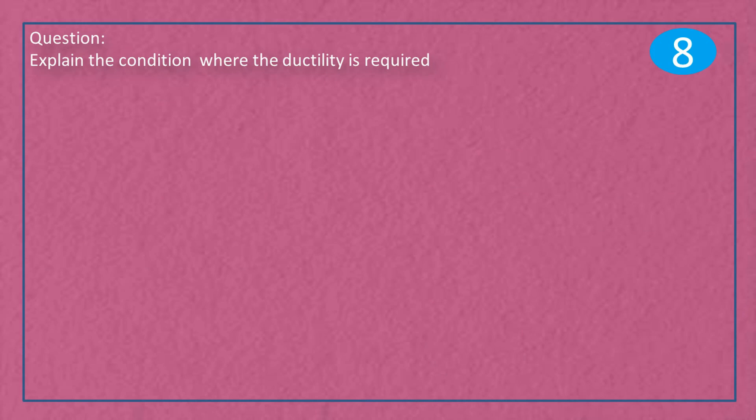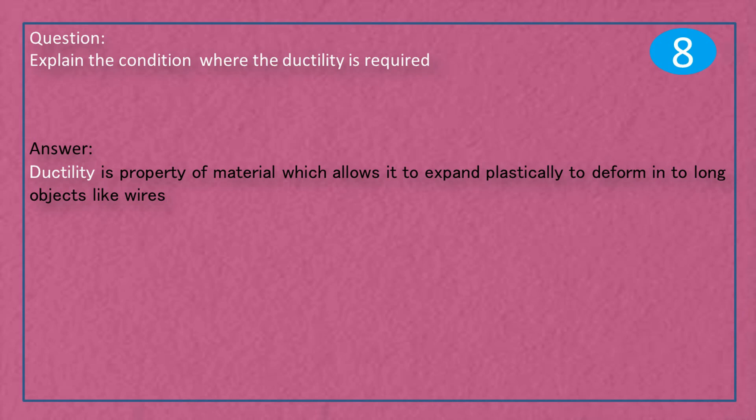Question: Explain the condition where the ductility is required. Answer: Ductility is property of material which allows it to expand plastically, to deform into long objects, like wires.